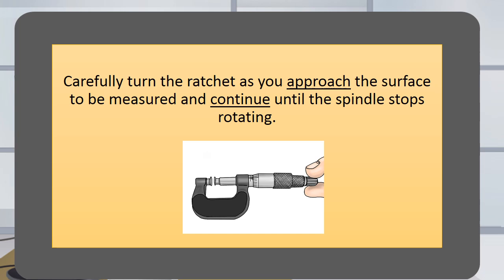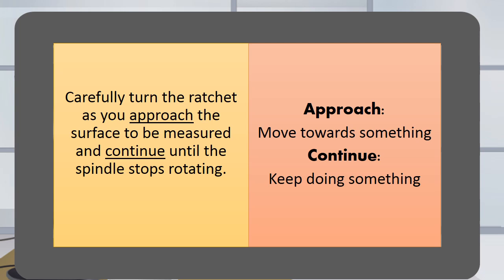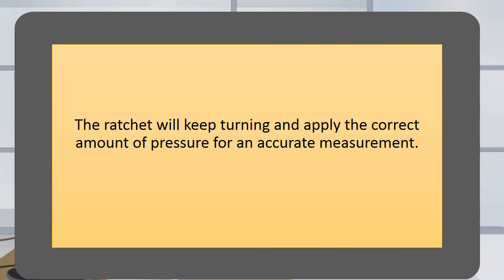Carefully turn the ratchet as you approach the surface to be measured and continue until the spindle stops rotating. The ratchet will keep turning and apply the correct amount of pressure for an accurate measurement.